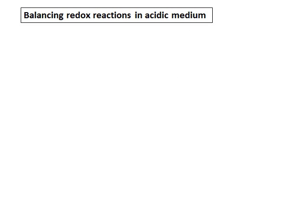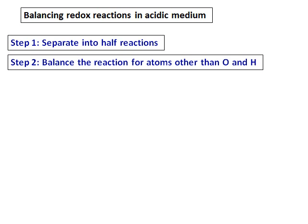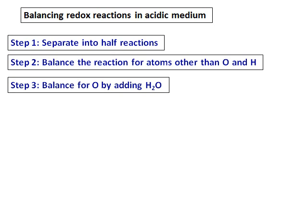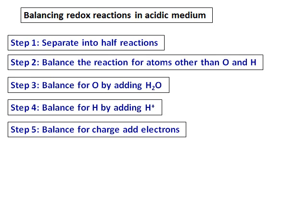Balancing redox reactions in acidic medium: First, separate the redox reaction into two half reactions. Then balance the reaction for atoms other than oxygen and hydrogen. After that, balance for oxygen by adding water, then balance for hydrogen by adding H⁺. After doing the first four steps, now balance the charges by adding electrons.